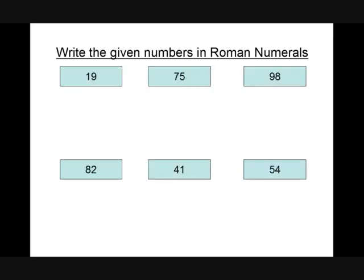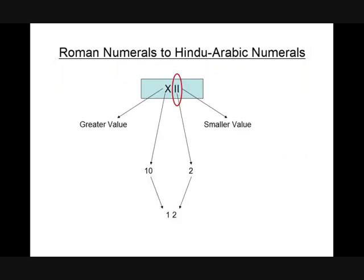Children, it's your turn — find the Roman numeral for the following Hindu-Arabic numerals. To convert Roman numerals to Hindu-Arabic numerals, we first write the value of each symbol. For example, the value of the first symbol is ten and the value of the second symbol is two. Adding both values, ten plus two equals twelve.